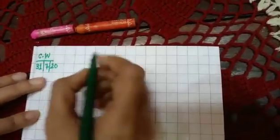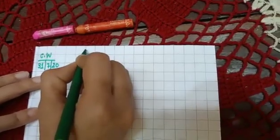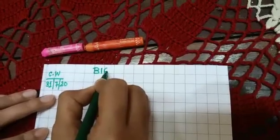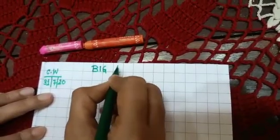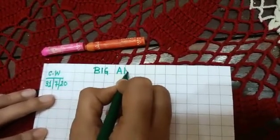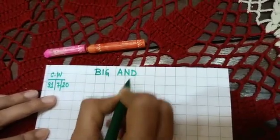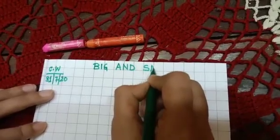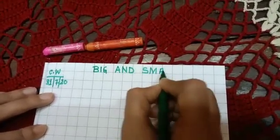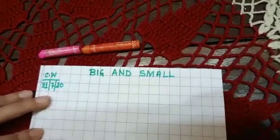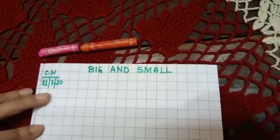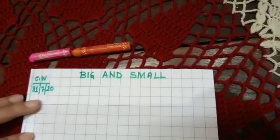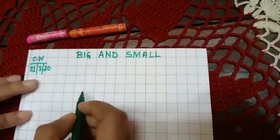Here you will write big, B-I-G, and, A-N-D, small, S-M-A-L-L. Big and small. Written everyone.